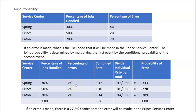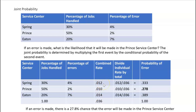We start by multiplying: since 30% of the jobs are handled at Spring and 4% result in errors, that's a combined rate of 0.012 — we call it a combined rate because we're multiplying two rates together (30% × 4% = 0.012). For the Prince center: 50% of jobs × 2% error rate = 0.010. For Eaton: 20% × 7% = 0.014. Adding all three combined rates: 0.012 + 0.010 + 0.014 = 0.036.